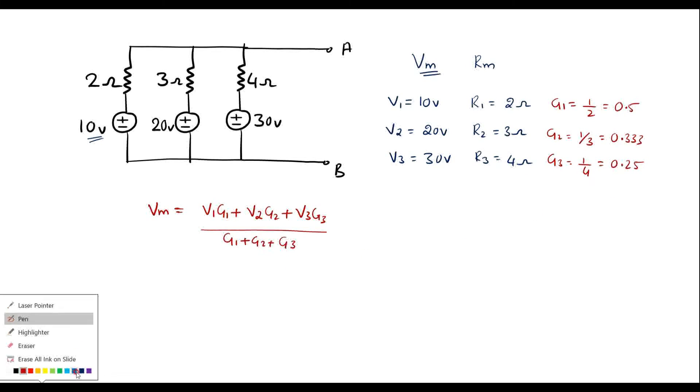Now let me substitute all the values in this equation. I can write V1 is 10 into G1 is 0.5, plus V2 is 20 into G2 is 0.333, plus V3 is 30 into G3 is 0.25, whole divided by G1 plus G2 plus G3, that is 0.5 plus 0.333 plus 0.25.